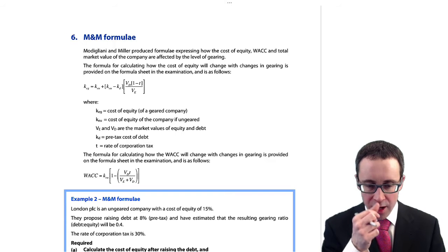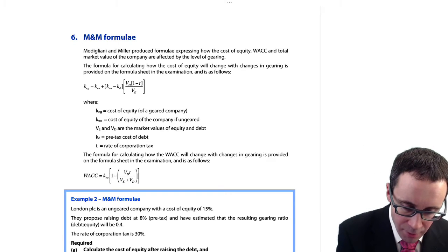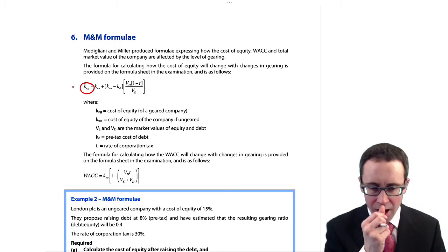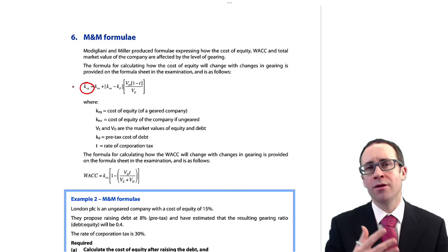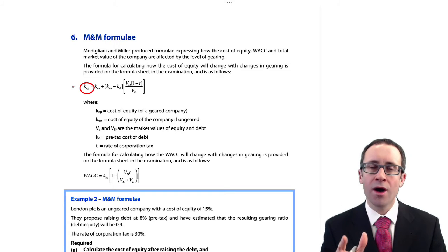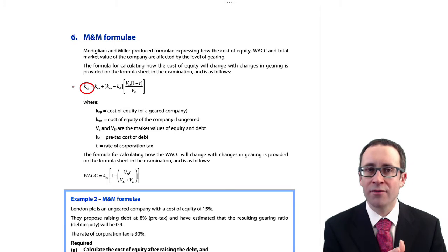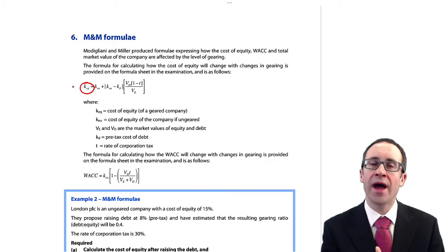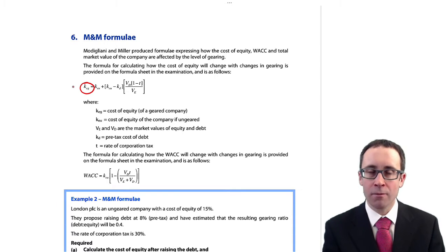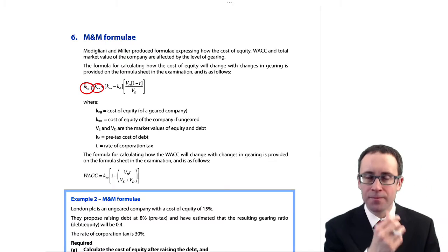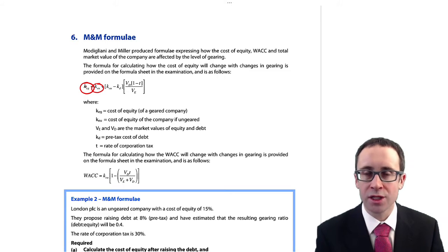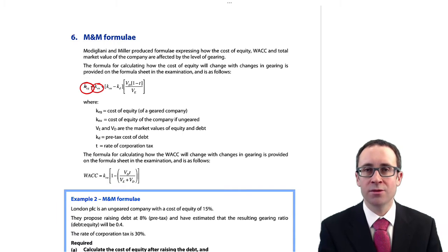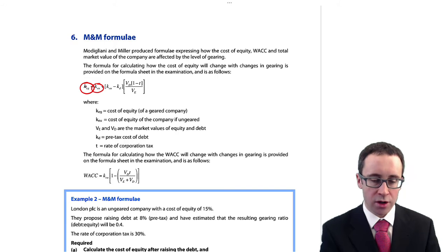They will be given to you within the formula sheet. So what you've got there, the first formula wants us to go through that and work out the cost of equity and refer to it as KEG. KEG being the cost of equity for a geared company. Because remember, that's what the theories are doing. The theories are looking at what happened to the cost of equity and the weighted average cost of capital as we introduce more and more debt. So we start off with the cost of equity for an ungeared company, which you can see there is KEU.